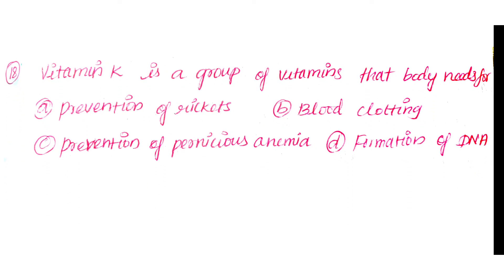Question number 18: Vitamin K is a group of vitamins that the body needs for. Option A: Prevention of rickets. Option B: Blood clotting. Option C: Preventing pernicious anemia. Option D: Formation of DNA. The answer is Option B: Blood clotting.